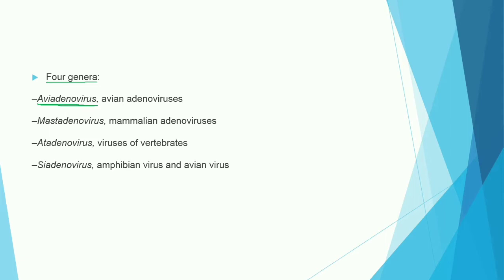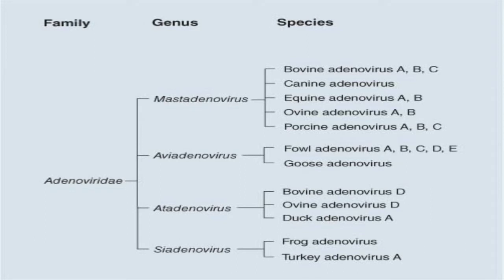The four genera are: Aviadenovirus, Mastadenovirus, Atadenovirus, and Siadenovirus. Aviadenovirus infects avian species. Mastadenovirus includes mammalian adenoviruses and infects mammalian species. Atadenovirus includes viruses of vertebrates, and Siadenovirus includes amphibian and avian viruses.